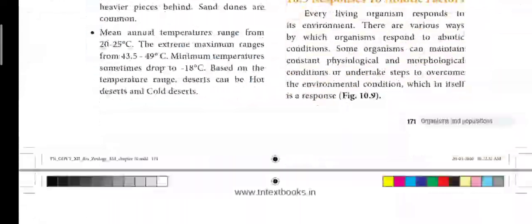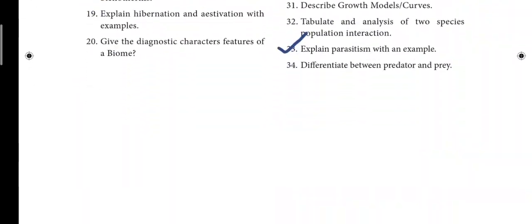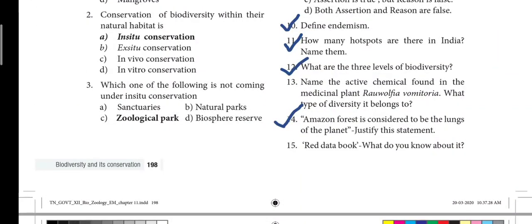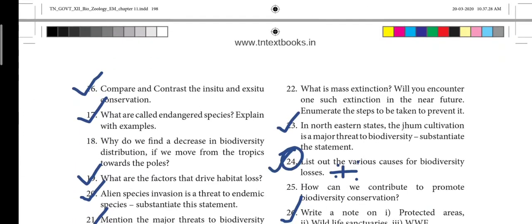Moving on to Lesson 11. In this lesson, give equal importance to book-back and book-inside. 10th question — define endemism. 11th question — how many hot spots are there in India? Name them. 12th question — what are the three levels of biodiversity? 14th question — Amazon forest is considered to be the lungs of the planet; justify this statement. 16th question — compare and contrast in-situ and ex-situ conservation; an important five-mark question.